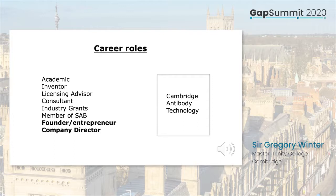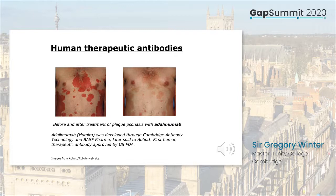With its commercial partners, Cambridge Antibody Technology developed several human therapeutic antibodies, including Humira, approved in 2002 for the treatment of rheumatoid arthritis and now one of the world's best-selling antibody drugs. Humira blocks the inflammatory mediator TNF and is also used for Crohn's disease and other inflammatory diseases. This was the first human therapeutic antibody to be approved by the FDA.